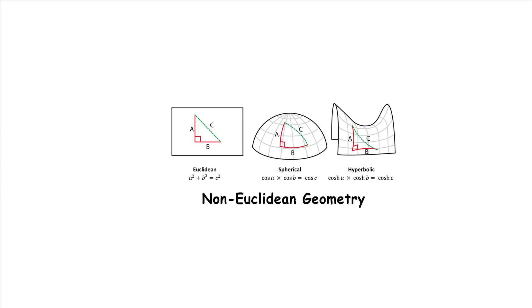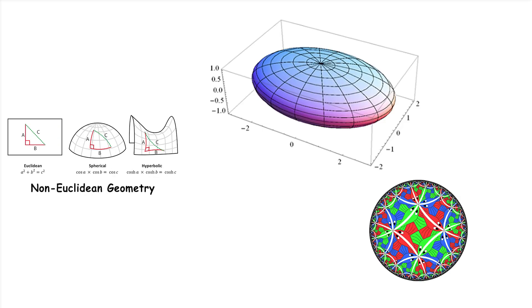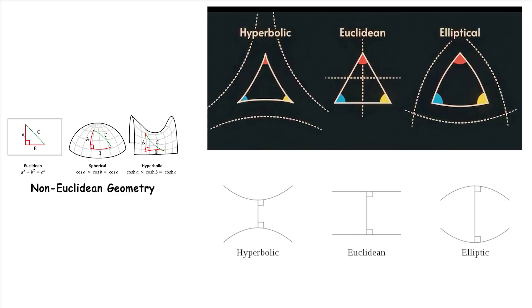Non-Euclidean geometry. Non-Euclidean geometry explores geometries that are not based on Euclid's postulates. The most famous types are hyperbolic and elliptic geometry. These geometries differ from Euclidean geometry in how they handle parallel lines and the sum of angles in a triangle, leading to different concepts of space.